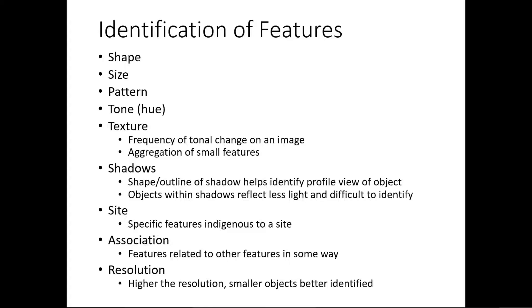The next parameter is tone or hue, which refers to the relative brightness or color of objects in an image. If you look at different types of plants, their relative brightness and color differ — there are many shades of green, and different species have different tones and reflections. Wet soil and dry soil also differ in tone — dry soil looks brighter than wet soil. These tone differences can be used to identify features in an aerial photograph.